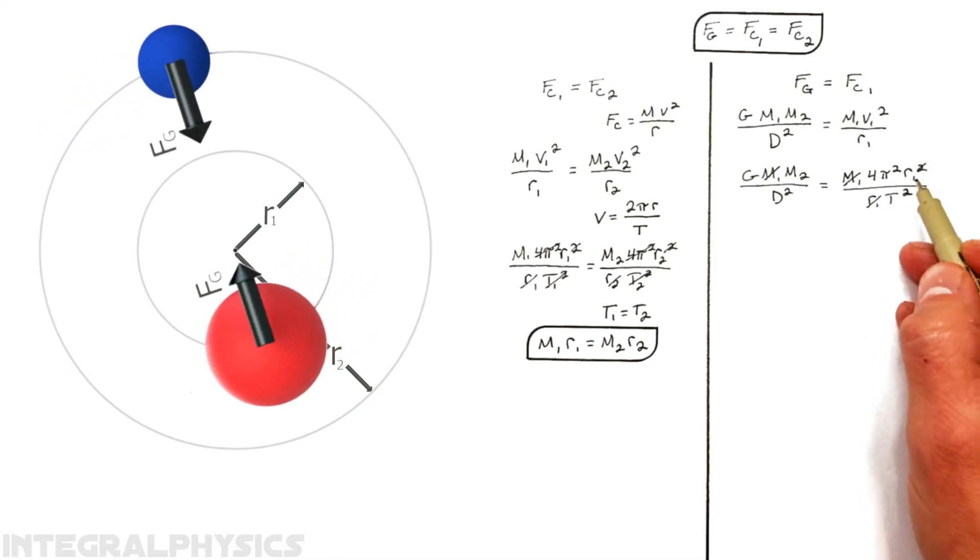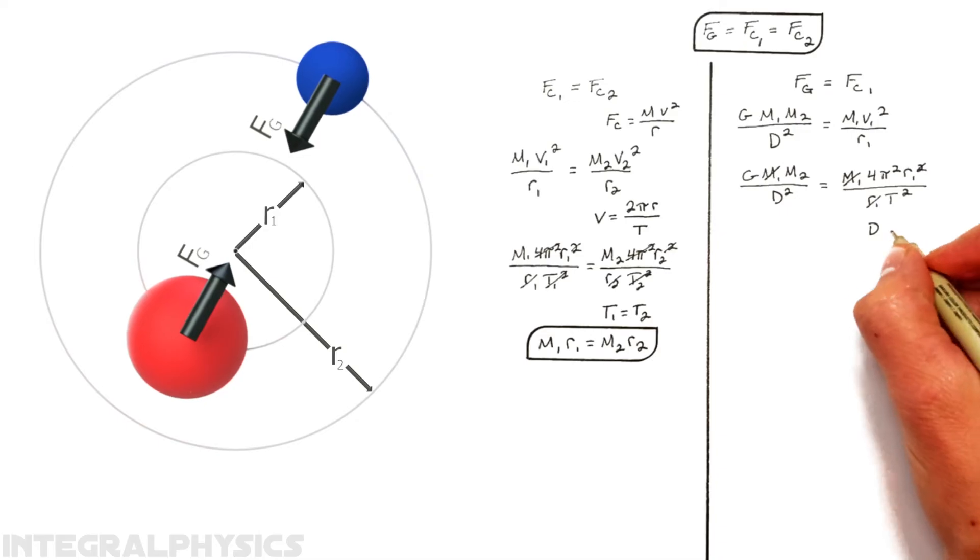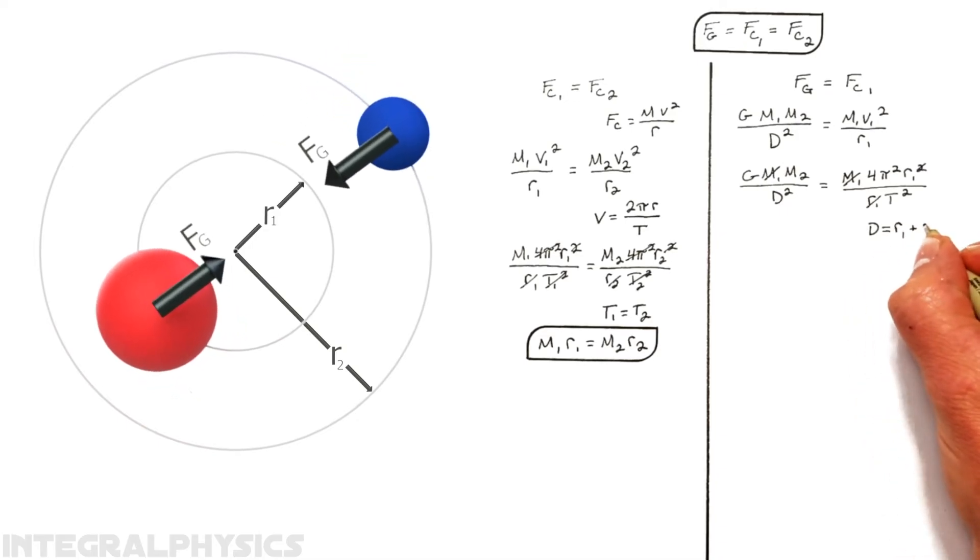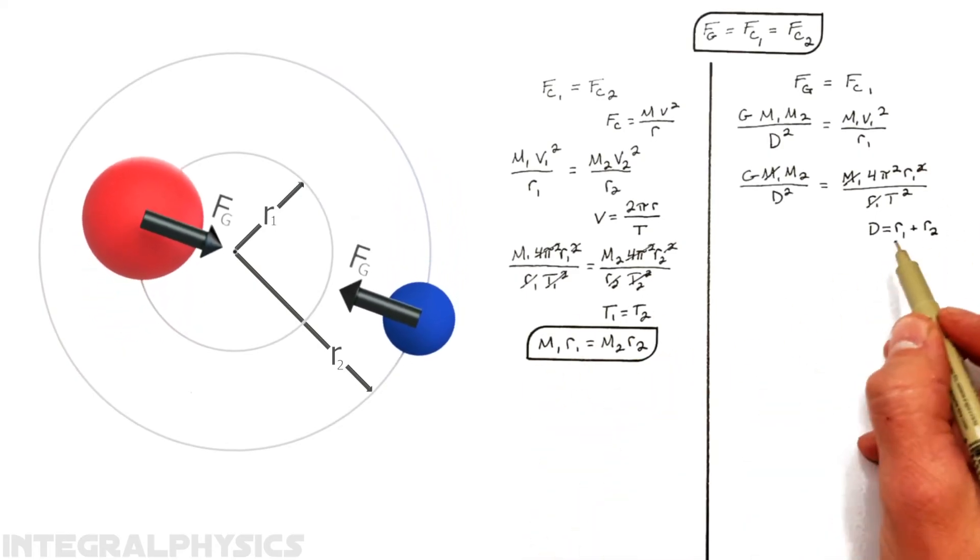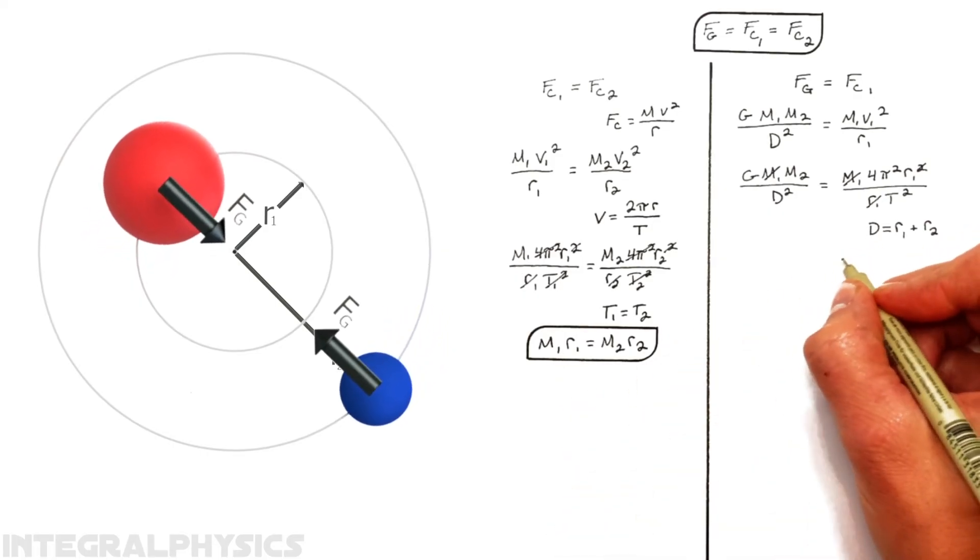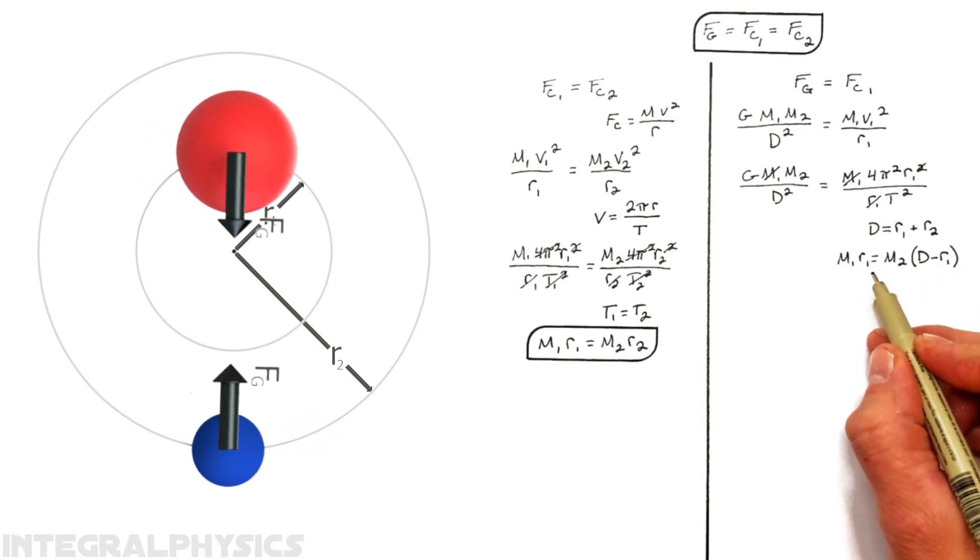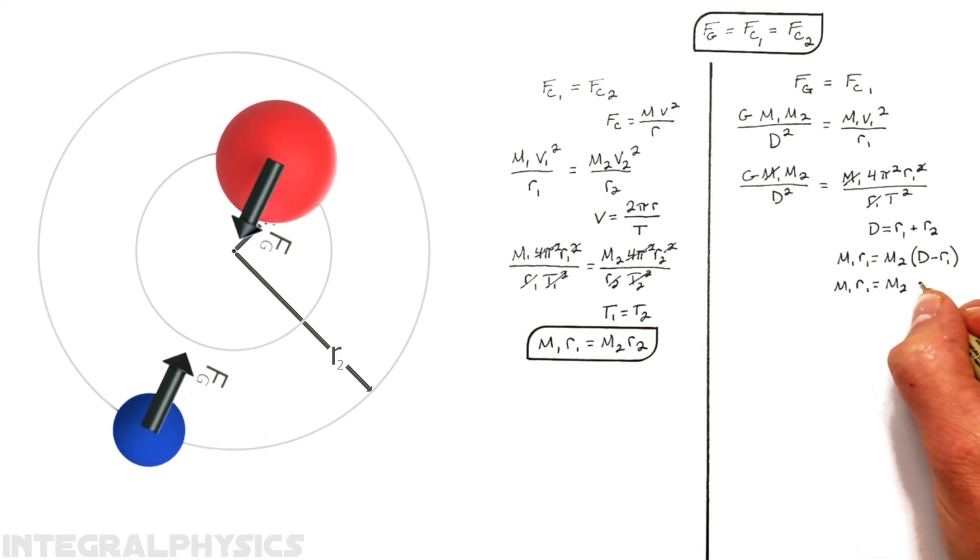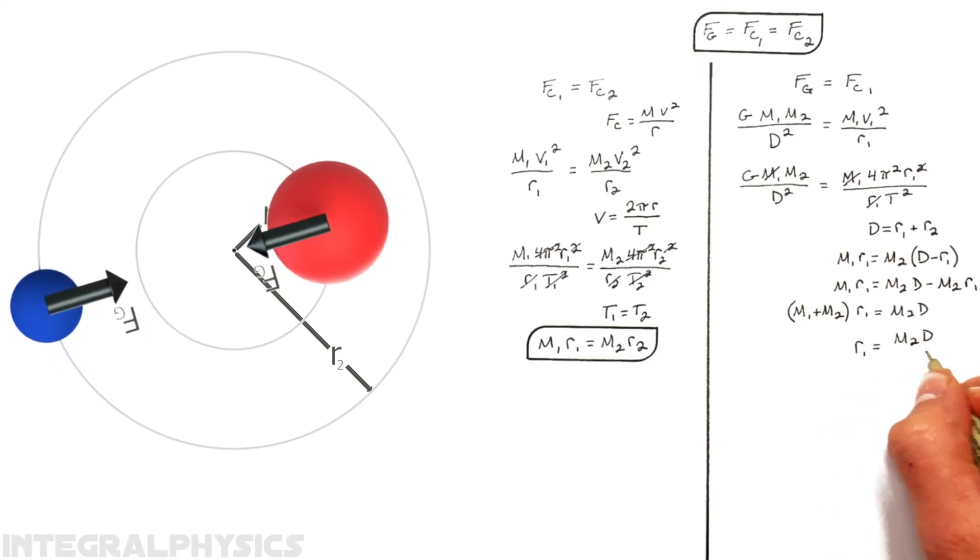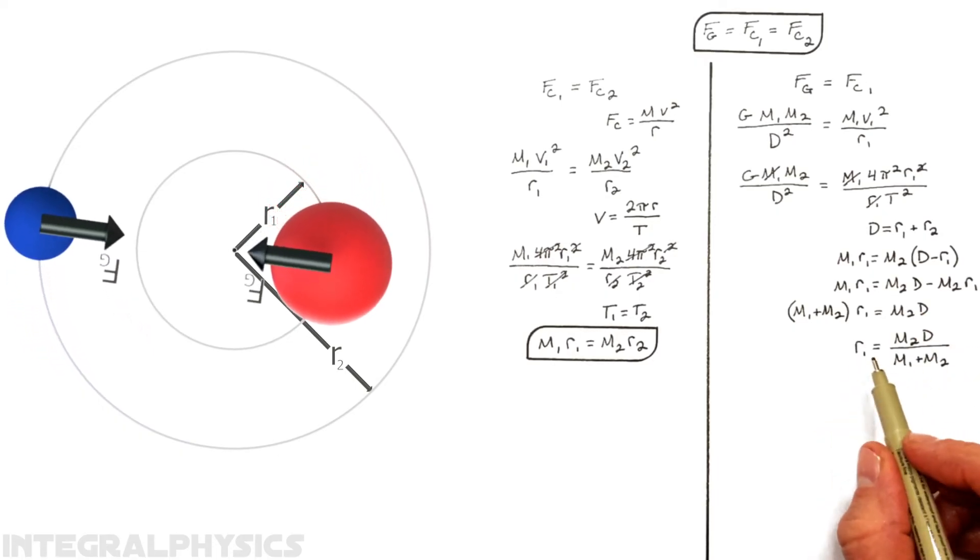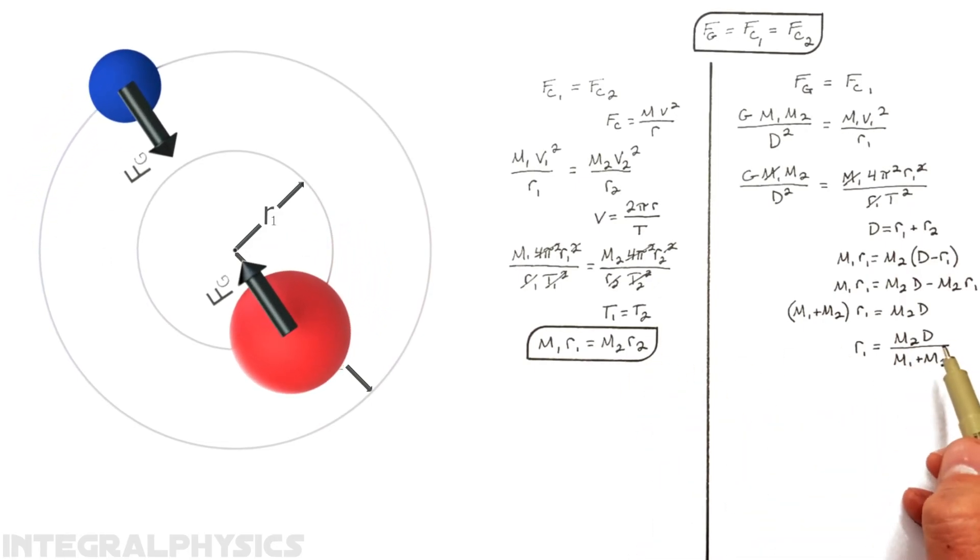And to do that, we're going to go back to really what d actually means. Remember, d the distance between the two masses is equal to the sum of their two orbital radii. And we already related these two radii to one another down here. So, subbing this equation in over here, I'm going to write it right here. We're going to be able to come up with an expression for this value r1. Distributing this m2 in and then rearranging for r1, we get an expression for r1 not as a function of r2 like we had over here, but as a function of our masses as well as the distance between them.